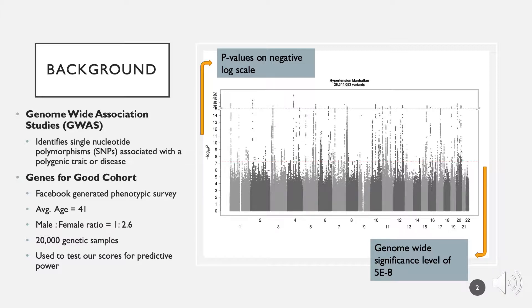Secondly, we tested the predictive power of our scores in the Genes for Good cohort. This Facebook-generated survey combines survey questions with genotyping and originated at the University of Michigan School of Public Health.